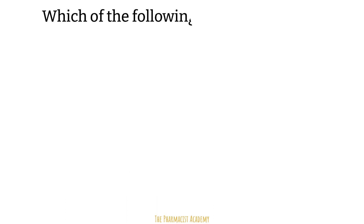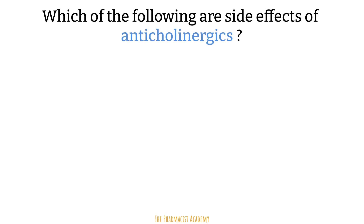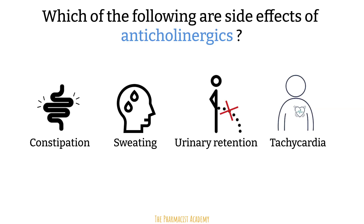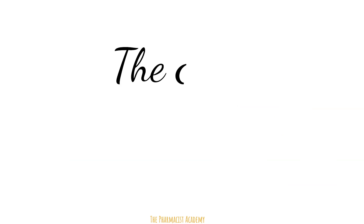Lastly, which of the following are side effects of anticholinergics? Anticholinergics reduce the activity of acetylcholine, so we get the opposite effects of rest and digest. Therefore, we would see constipation, urinary retention, and increased heart rate. And that would be all.